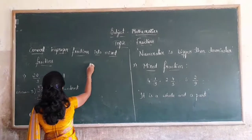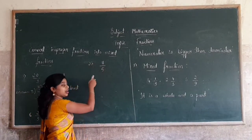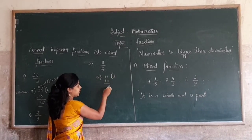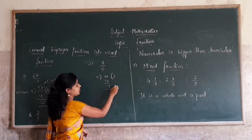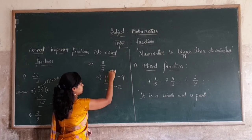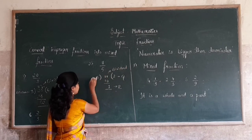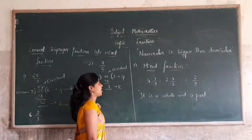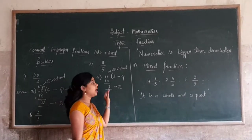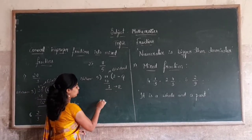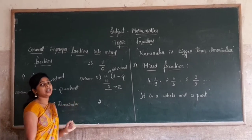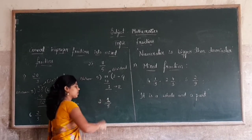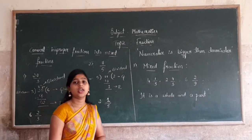Consider another example: 11 by 5. Now divide 11 by 5. You know how to convert improper fractions into mixed fractions. First we divide the improper fraction and write the quotient as the whole number. Then write the divisor in the denominator and the remainder in the numerator. This is the conversion of improper fractions into mixed fractions.